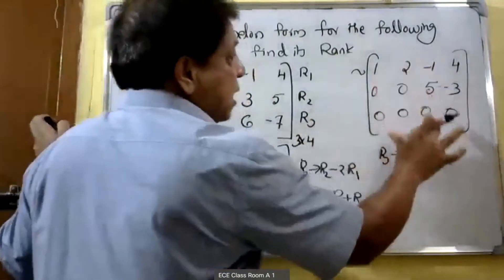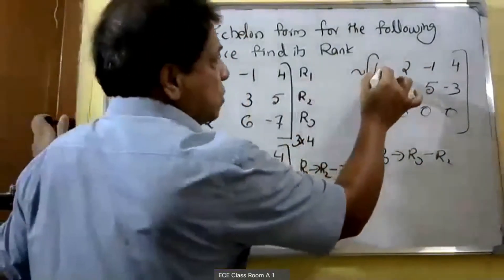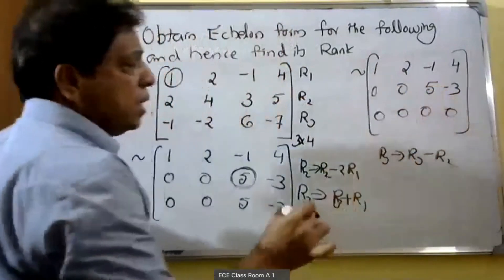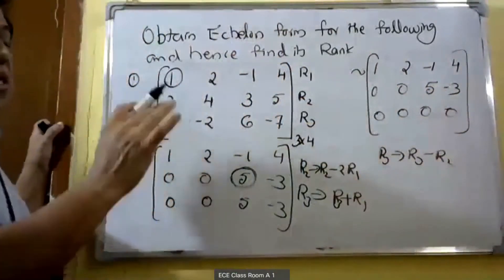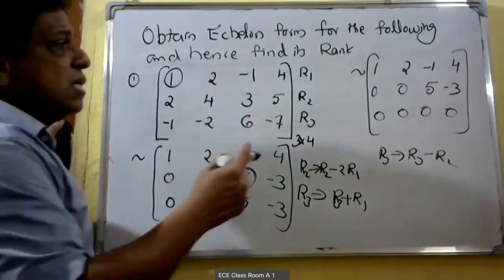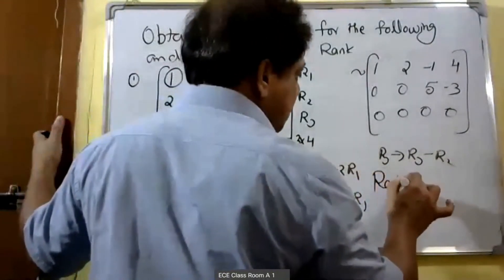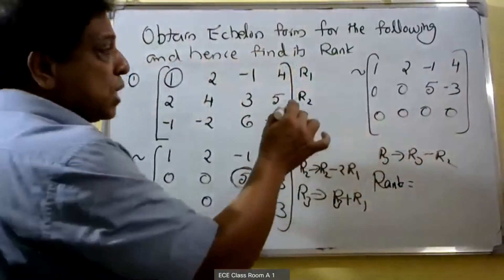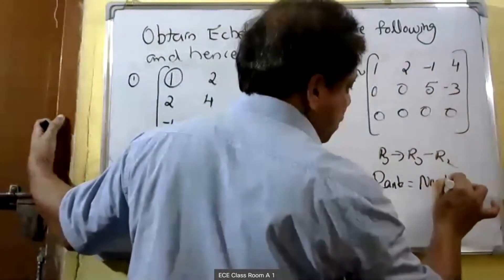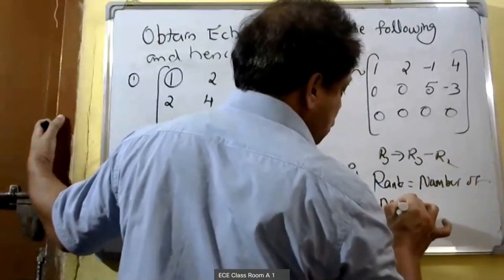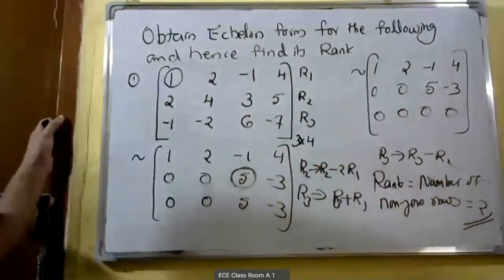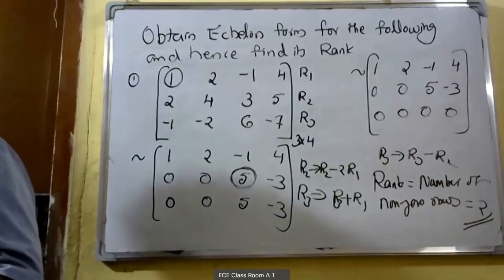This is the echelon form. The non-zero rows are the first row and second row. Rank is equal to the number of non-zero rows. Here the number of non-zero rows is two, therefore rank equals two. This completes the first problem.